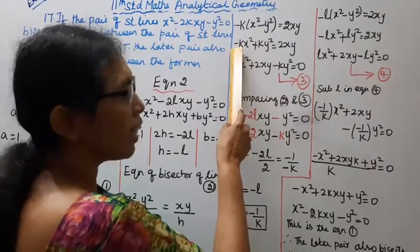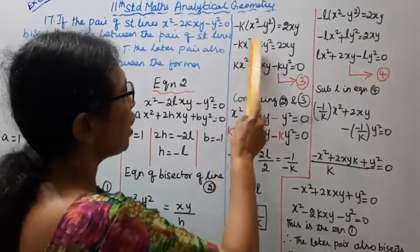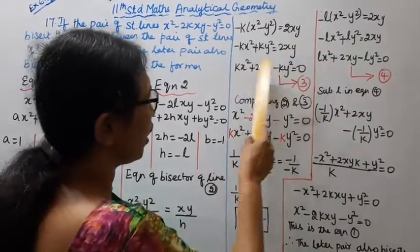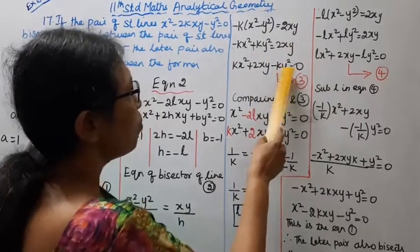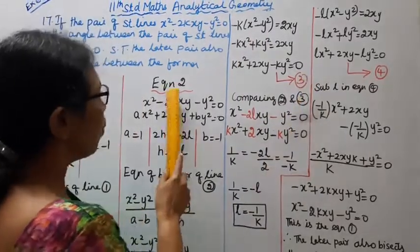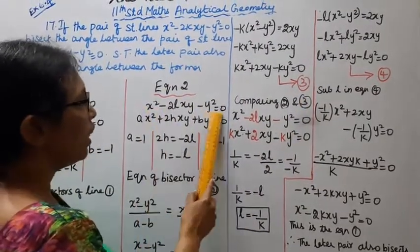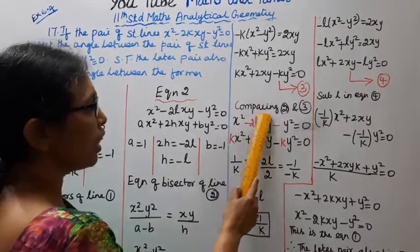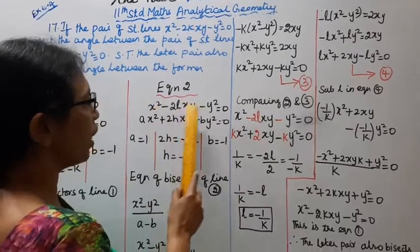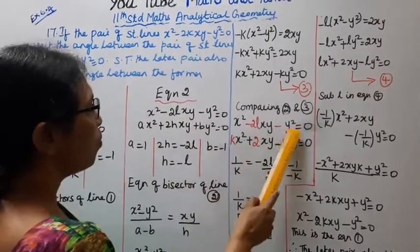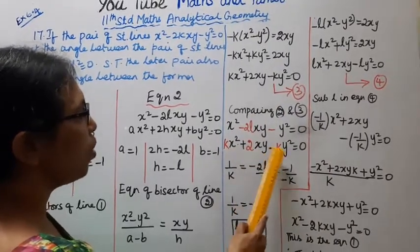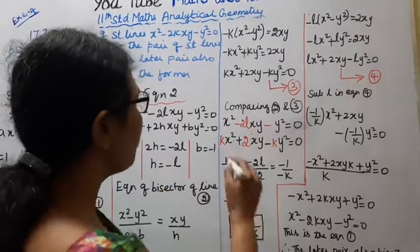Rearranging: -k(x² - y²) = 2xy gives -kx² + ky² = 2xy, so kx² + 2xy - ky² = 0. Dividing through by k: x² + (2/k)xy - y² = 0. Comparing with equation 2, x² - 2lxy - y² = 0, and equation 3, x² + 2xy/k - y² = 0.